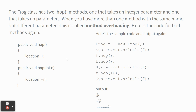The Frog class has two hop methods — one that takes an integer and one that doesn't. This is method overloading, which we talked about with constructor overloading. Method overloading is when you have more than one method with the same name but different signatures — they take different parameters. Java figures out which one to use when you run it.